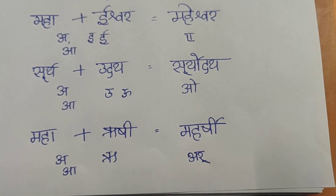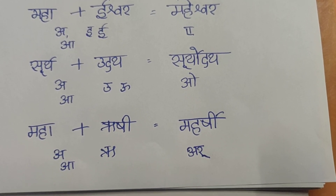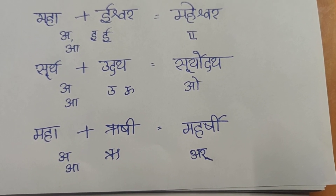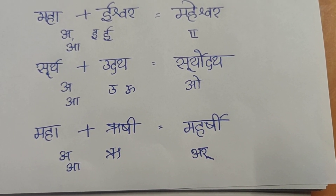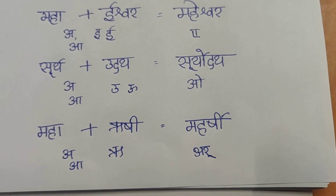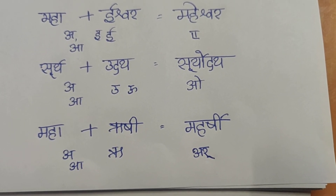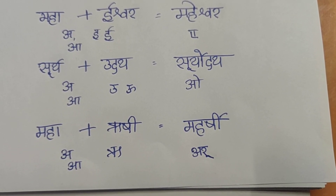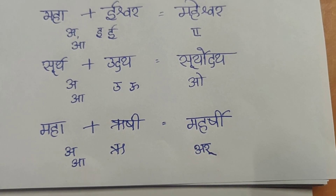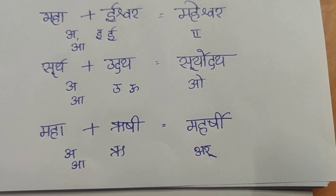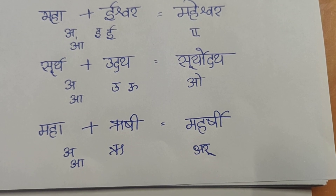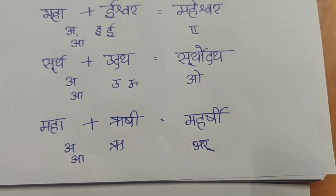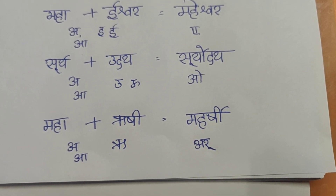Another variation of this Sandhi: Maharushi becomes Maharshi. Here, the first word ends with A or Ā, and the second word starts with the Ṛ (Roo) vowel, which gets converted to Ar. That's why the result is Maharshi. You can take the example of Rajarshi — Raja plus Rushi gives Rajarshi.